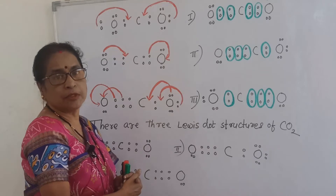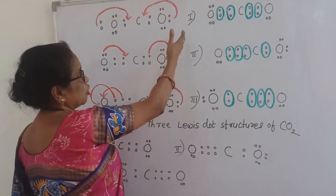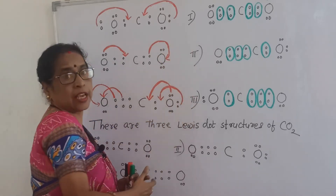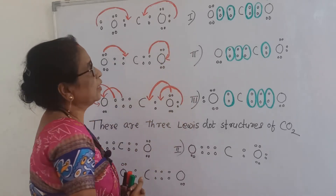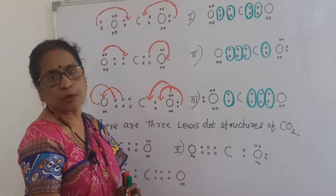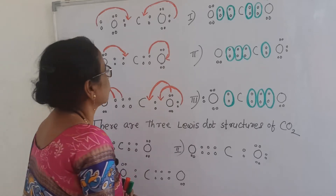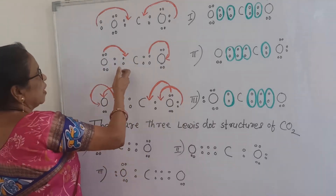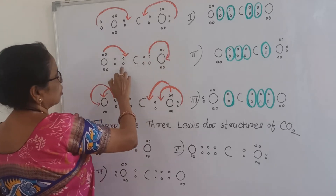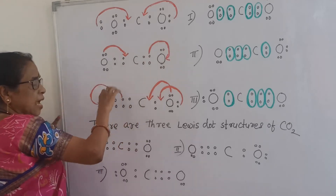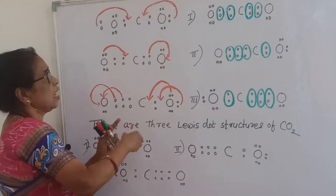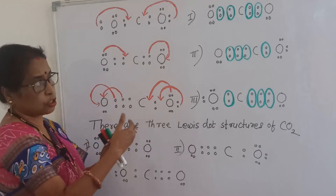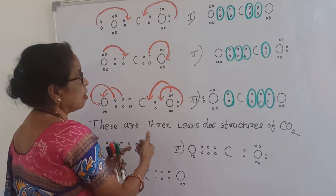After that we will see the formal charge for structure one, structure two, and structure three, and we will find the best Lewis structure and the original structure. This is the first Lewis structure. Here we will see how other possible Lewis structures are possible.